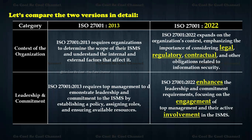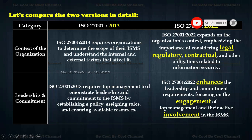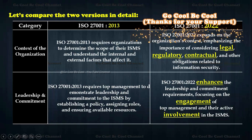Regarding the context of the organization, ISO 27001 2013 requires organizations to determine the scope of their ISMS and understand internal and external factors that affect it. The 2022 version expands on organizational context, emphasizing the importance of considering legal, regulatory, contractual, and other obligations related to information security. For leadership and commitment, both versions require top management to demonstrate leadership, but 2022 places stronger emphasis on active engagement of top management in the ISMS process.